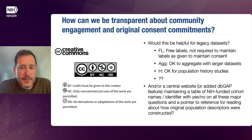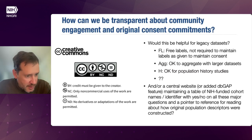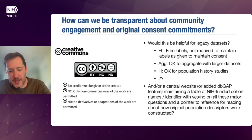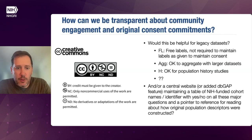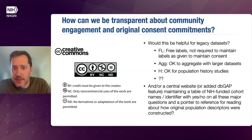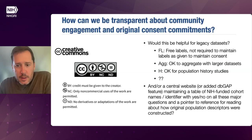Could there be a central website that maintains a table for all NIH-funded cohort names with a yes/no identifier on all these major questions, and a pointer to a reference for reading about how the original population descriptors were described? That reference would be per cohort — the place where you go to understand the community agreements and the descriptors devised by the original group that engaged with the community upon which the cohort is based, or broadly the original researchers and their choices in the aggregation they did when they agreed to have their data shared in dbGaP.